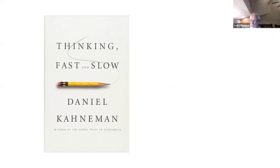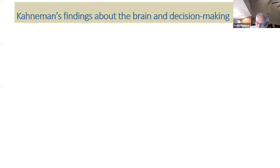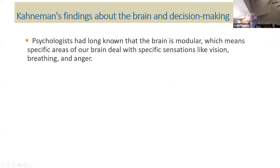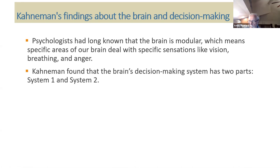It's a good book, by the way — not easy, but terrific. Kahneman's findings about the brain and decision-making: for a long time before Kahneman, psychologists had known that the brain is modular, meaning specific areas of the brain dealt with specific sensations like vision, breathing, and anger. Kahneman was looking at the decision-making process and found that the brain had two parts to it, which he called System 1 and System 2.